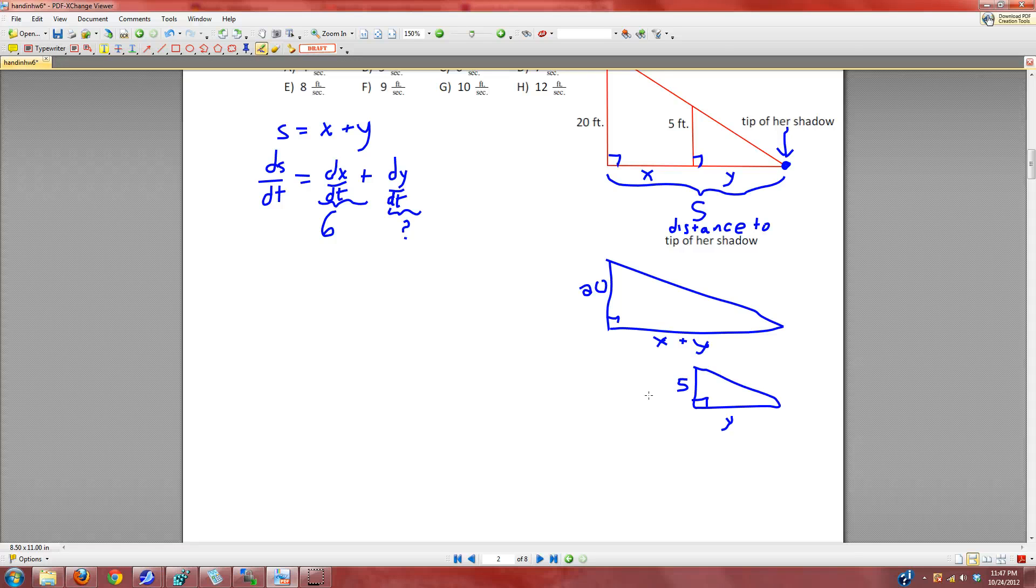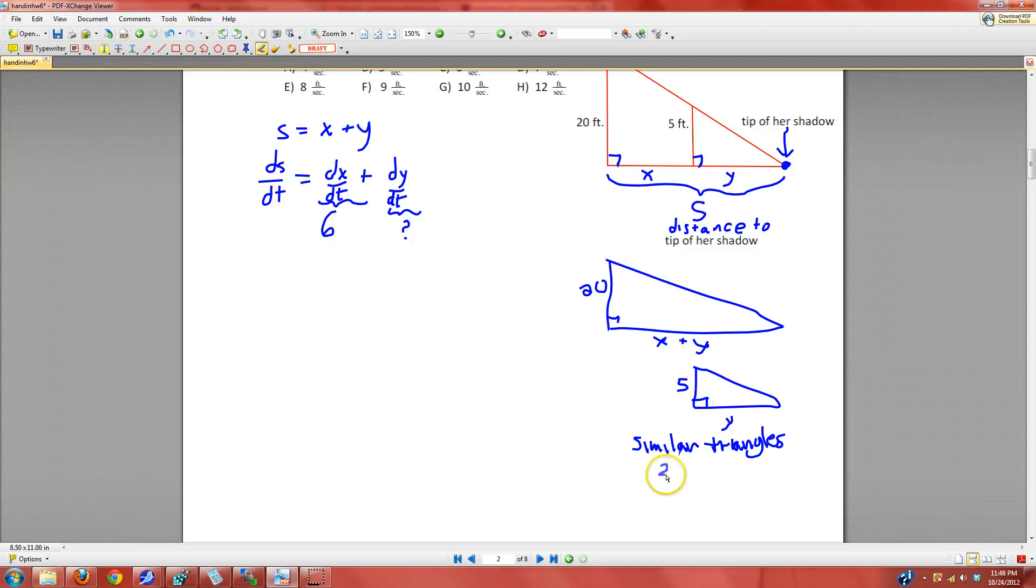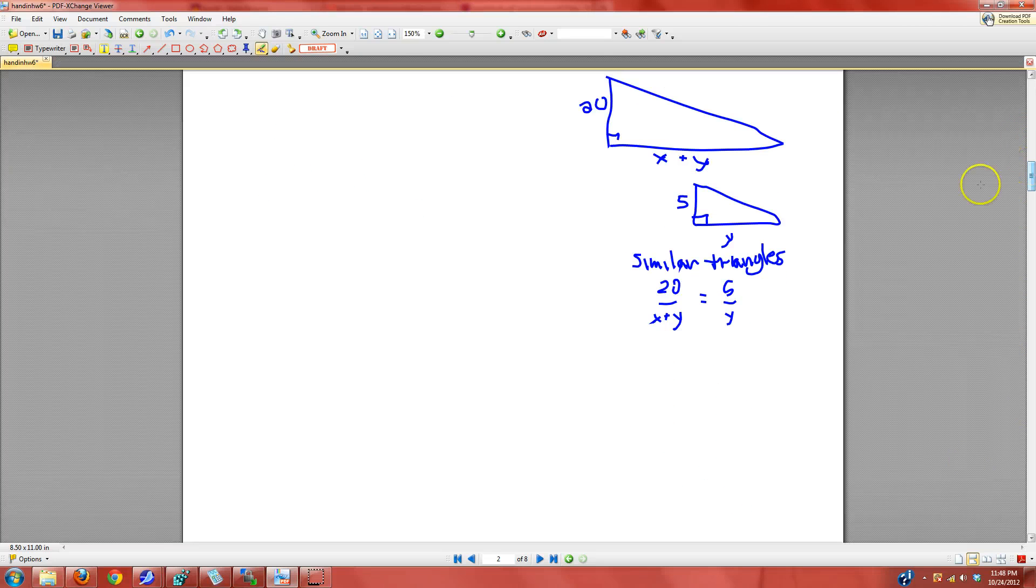And so, from similar triangles, what we get is that their corresponding parts are in proportion. There's many different ways to set it up. One way is to say that 20 is to X plus Y, if I were to stay inside of one triangle, as 5 is to Y. And this will give us our relationship between X and Y that we need.